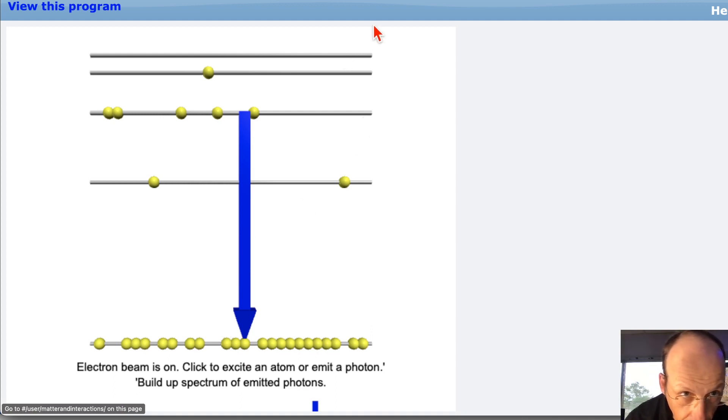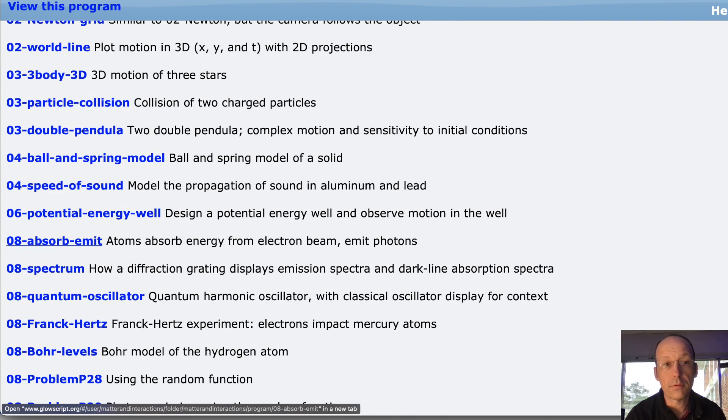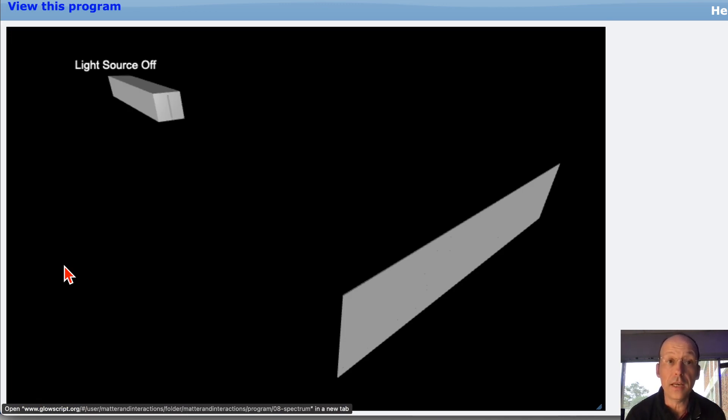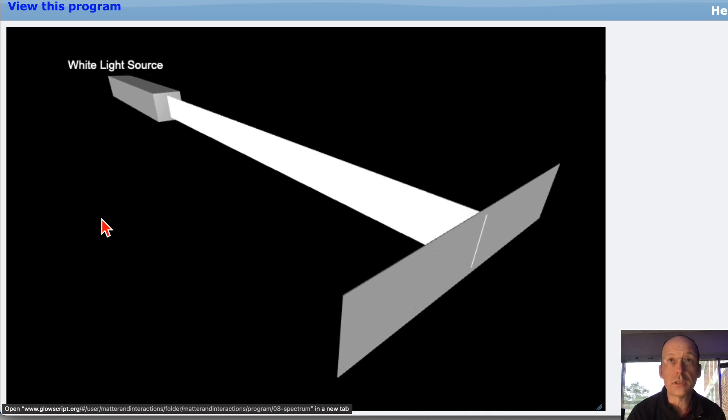Let's look at another one, the spectrum one. This is really important. How do we know about the frequency of light? So here is a light source. And a white light source contains the full spectrum of colors, right? The visible colors, which are red, orange, yellow, green, blue, violet.